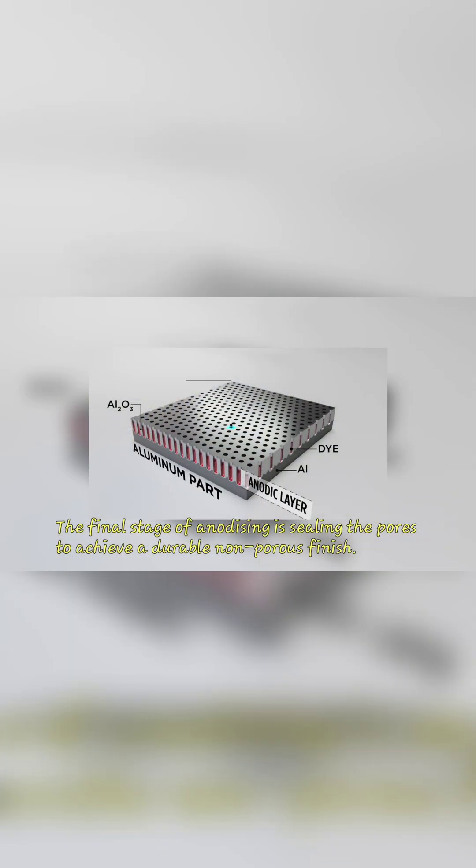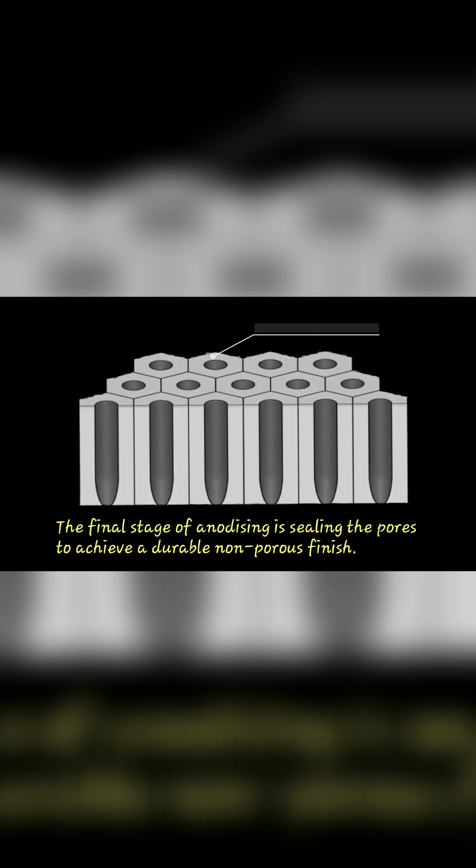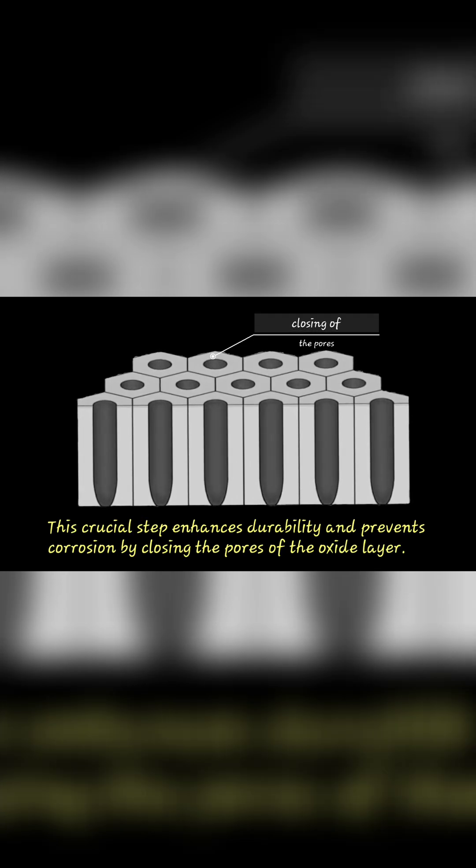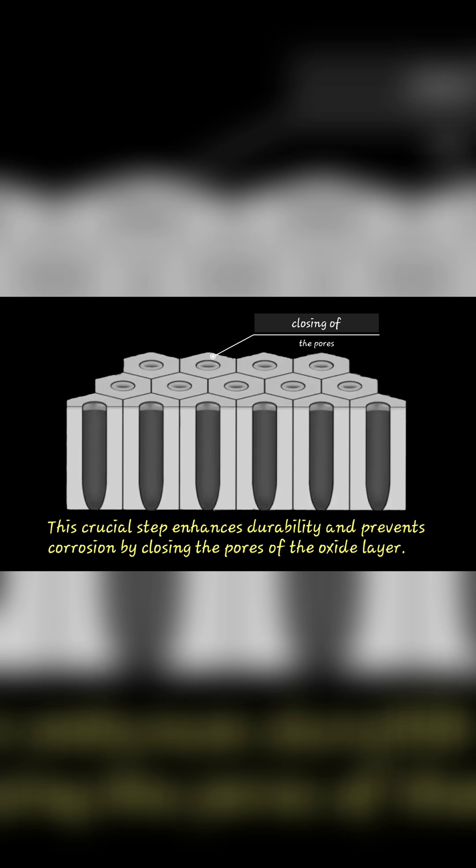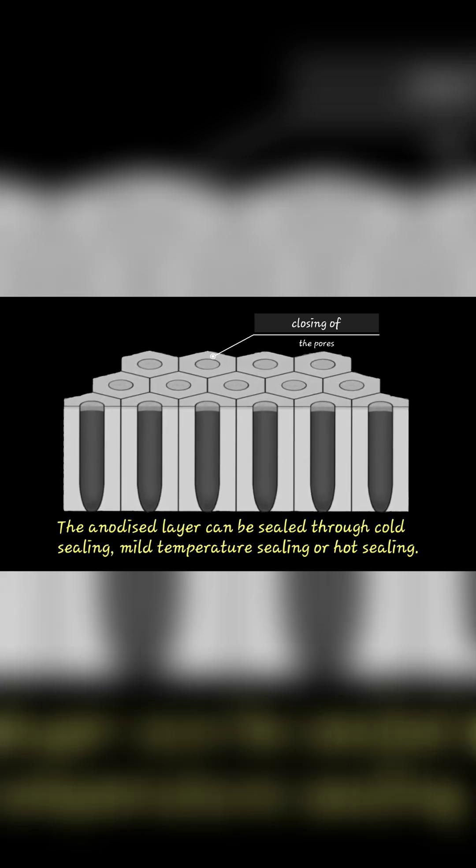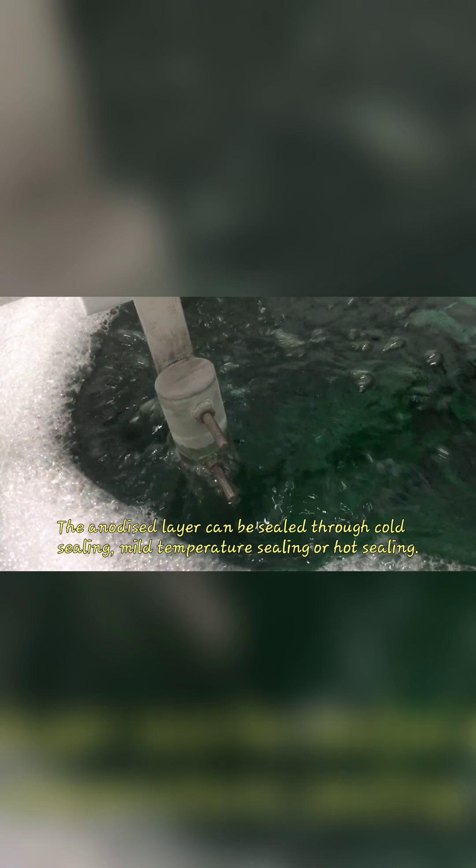The final stage of anodizing is sealing the pores to achieve a durable non-porous finish. This crucial step enhances durability and prevents corrosion by closing the pores of the oxide layer. The anodized layer can be sealed through cold sealing, mild temperature sealing, or hot sealing.